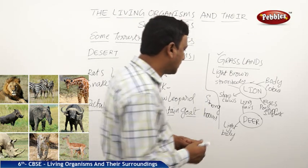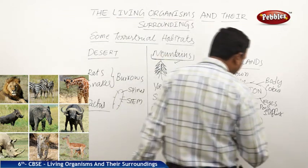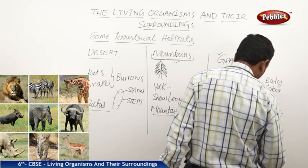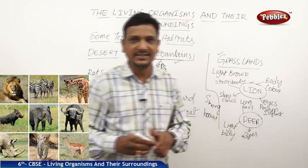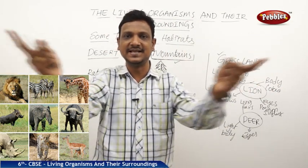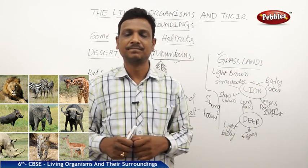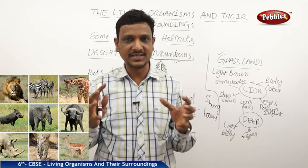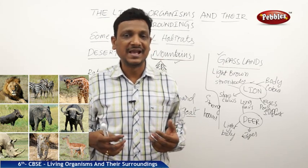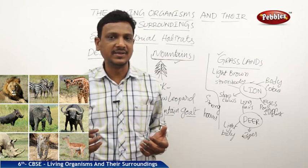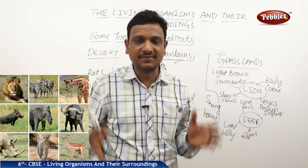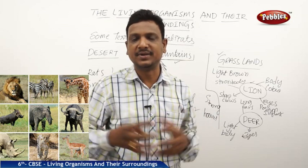The deer has eyes on the sides of its head. By that, it can sense danger in 360 degrees. So it has got features to protect itself and escape from the predator. The predator itself has got features to catch the prey.